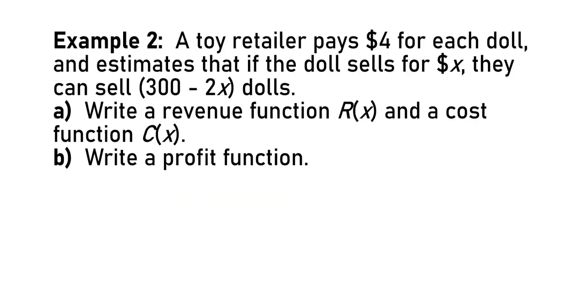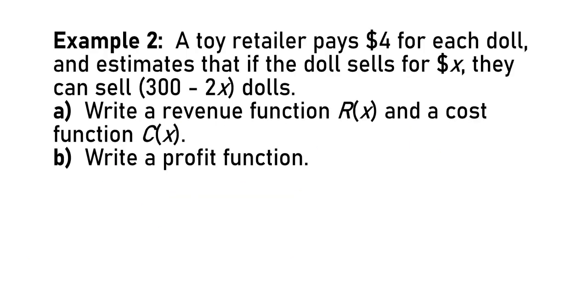We can figure out the profit for selling X pairs of socks this way. Question two is similar, so we can move through it a little bit more quickly. Toy retailer pays $4 for every doll. If the doll sells for X dollars, they can sell 300 minus 2X dolls, looking for revenue.